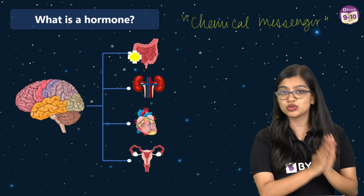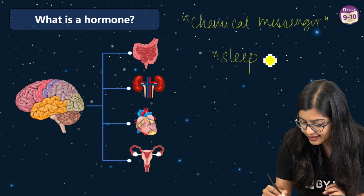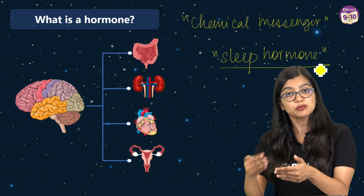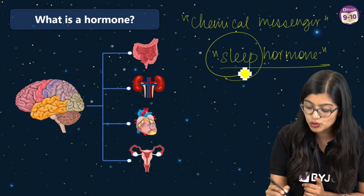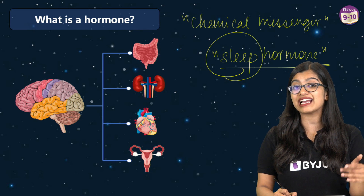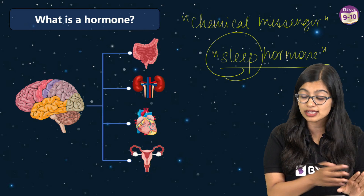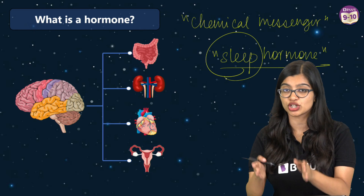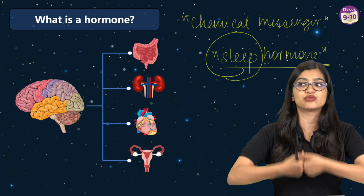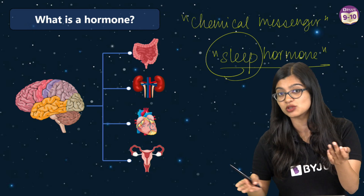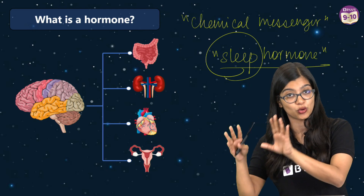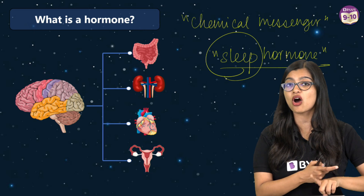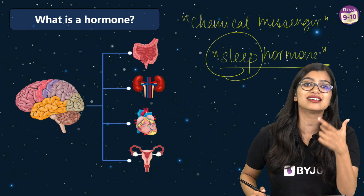We are talking about something known as a sleep hormone. From the name itself we can understand that this particular hormone is responsible for regulating our sleep cycle, or the 24-hour biological clock. This biological clock tells us how many hours our body should rest and go to sleep, and when it can be active and carry out its functions. We call it a biological clock, or more technically, the circadian rhythm.